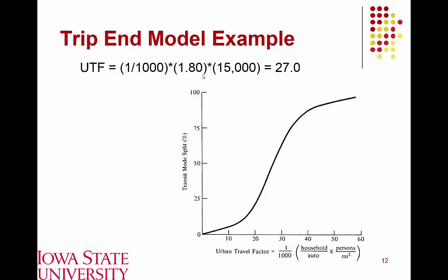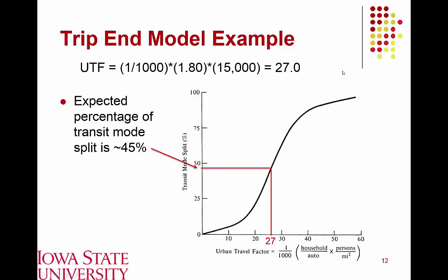We can directly calculate the urban travel factor: 1.8 automobiles per household times 15,000 persons per square mile gives an urban travel factor of 27. Going to the graphic, an urban travel factor of 27 yields roughly a 45% transit share. We can use that 45% to determine the total number of trips that will utilize transit in this community. That's the trip end model.